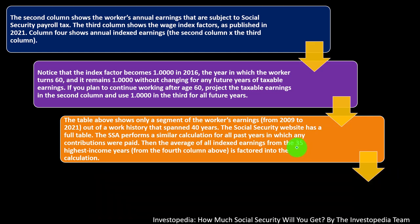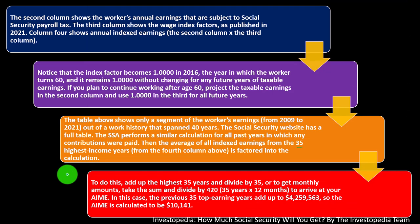The SSA performs a similar calculation for all past years in which any contributions were paid, then takes the wages of all indexed earnings from the 35 highest income years. It's a pretty large number — 35 years. To do this, add up the highest 35 years and divide by 35, or to get monthly amounts, divide the sum by 420 — that's 35 years times 12 — to arrive at your AIME. In this case, the previous 35 top earnings years add up to $4,259,563, so the AIME is calculated to be $10,141.